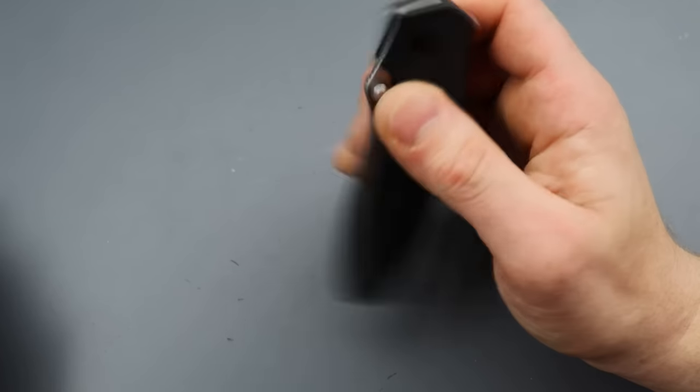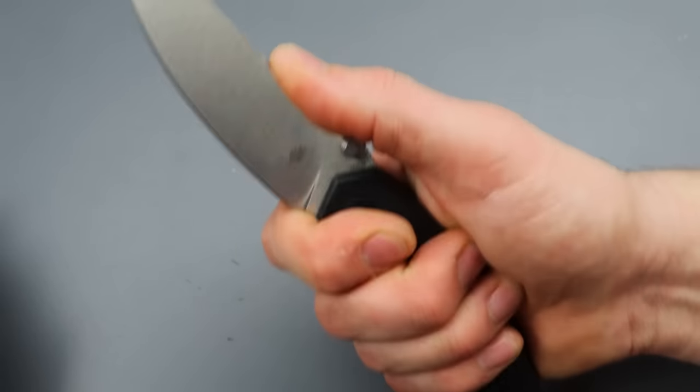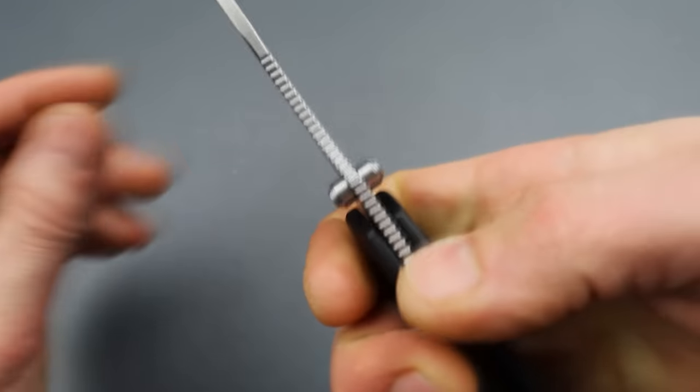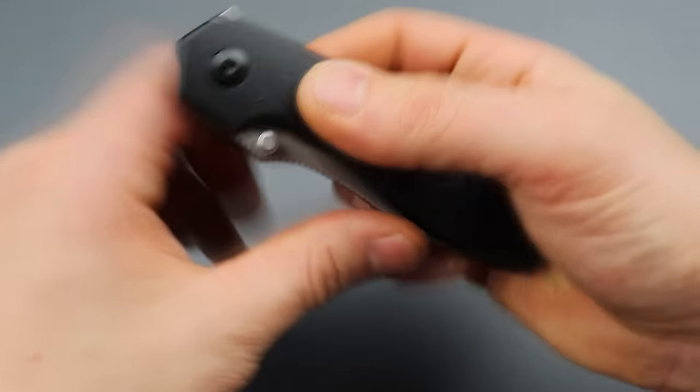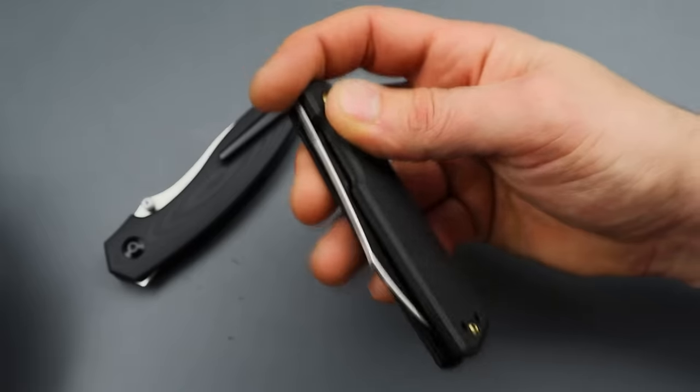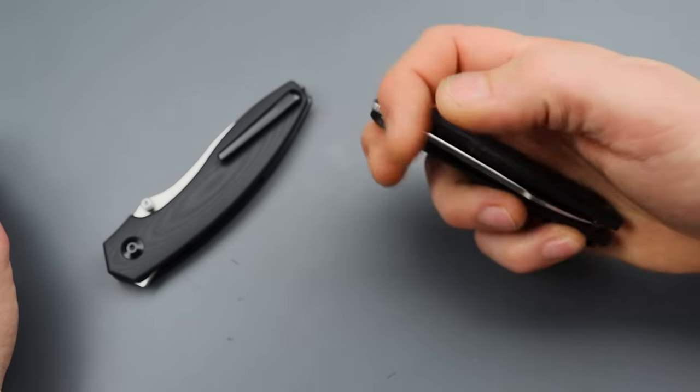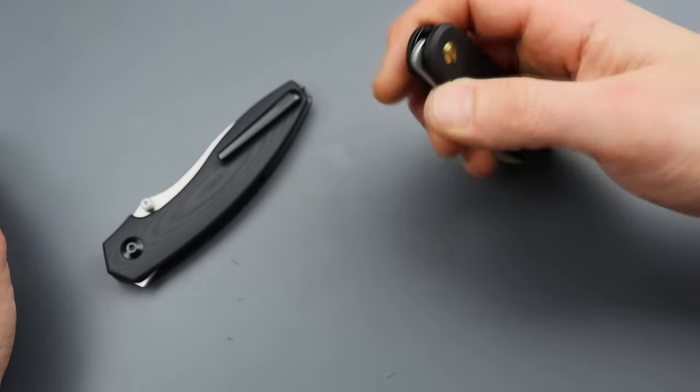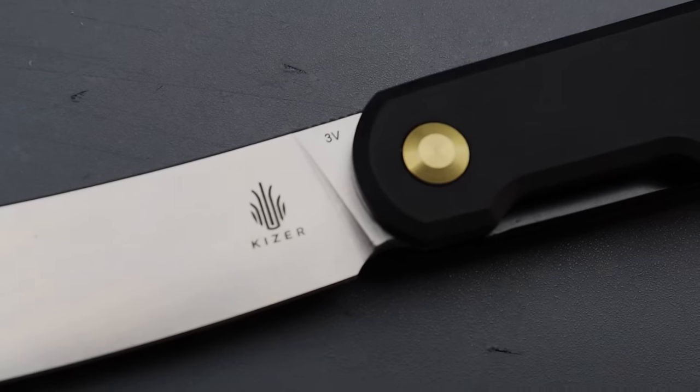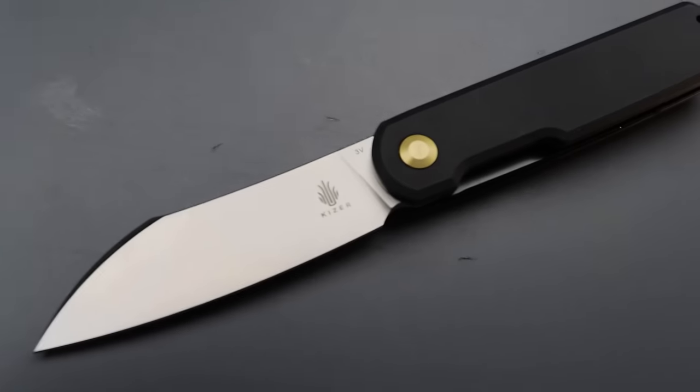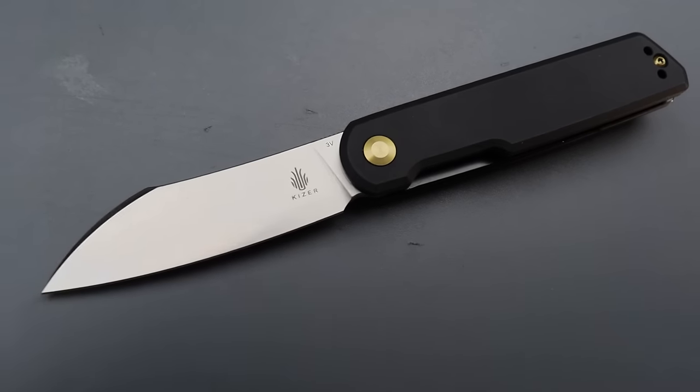And a titanium backspacer. So, it does still have titanium. And then this one's 154cm blade steel. Good access to the lock bar. Phenomenal action. Great jimping. Like, really useful jimping. But, there's also the Kaiser Clipper. This one is 3V in aluminum. And it's like $80, $70, $80 for aluminum and 3V. What? That's amazing. That's absolutely amazing.